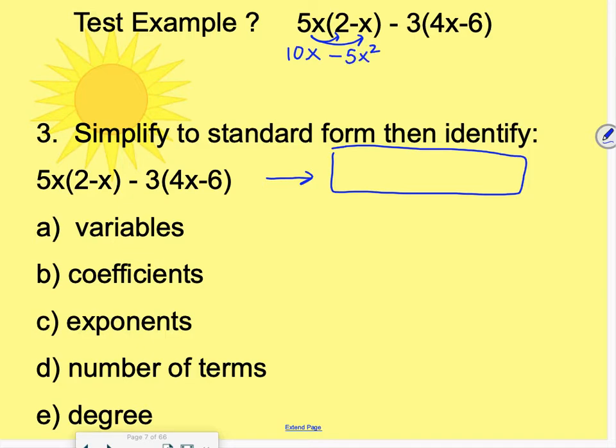So I'm going to take 5x times 2 to get 10x minus 5x times x to get 5x squared. And then this is where a lot of people make a simple mistake. You are not distributing the 3 here. You are distributing a negative 3. So plus negative 3 times 4x is negative 12x. You could also write that as minus 12x. And a lot of you probably had minus 12x there, but you may have forgotten that you're distributing the negative with the 3 to the negative 6. So this is plus negative 3 times negative 6, which is a positive 18. And that's the most common mistake is people will have a minus 18.